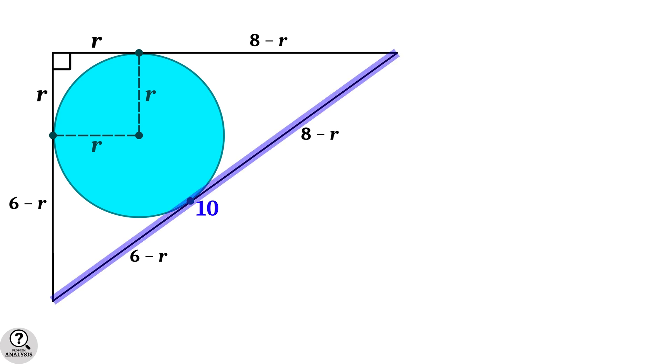Now observe the hypotenuse of this right triangle. We can conclude that (8 - R) + (6 - R) = 10. That is, 14 - 2R = 10, so 2R = 4, which means the radius R = 2 units.